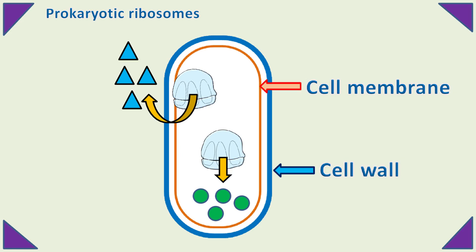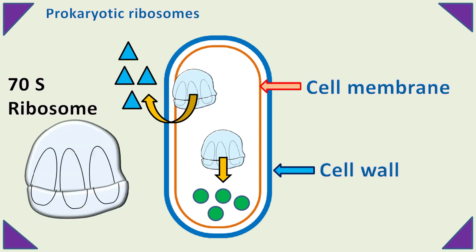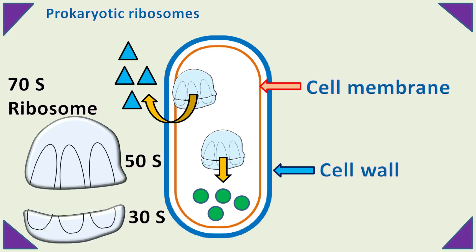On the basis of their sedimentation profile during centrifugation, the prokaryotic ribosomes are also called 70S ribosomes. The 70S ribosome is made up of 50S and 30S subunits.